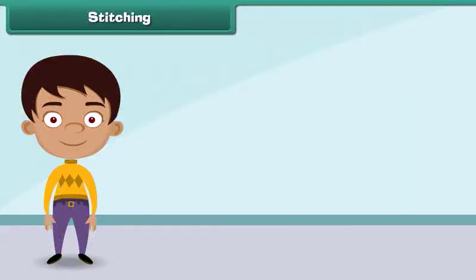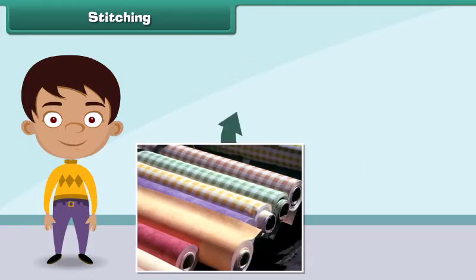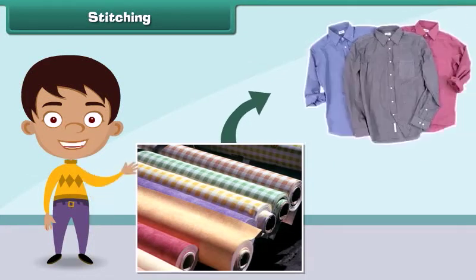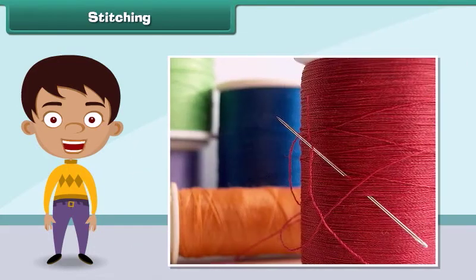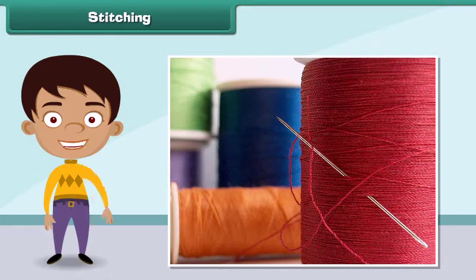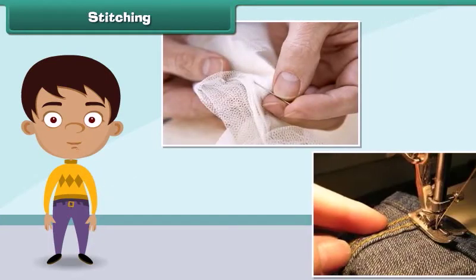Stitching is the process by which fabrics are converted into clothes. It involves sewing a fabric with needle and thread. In olden days, stitching was done by hand, but nowadays stitching is done with machines.